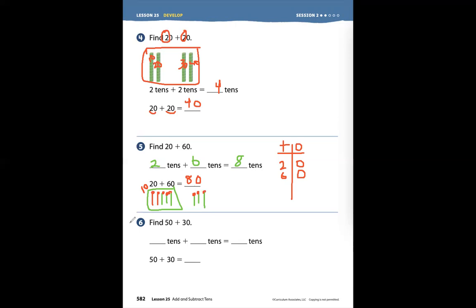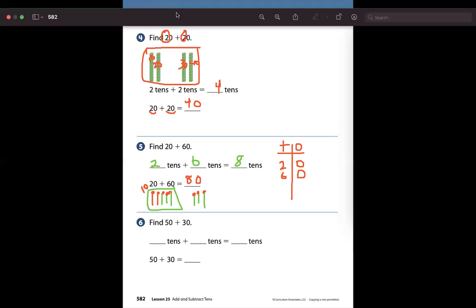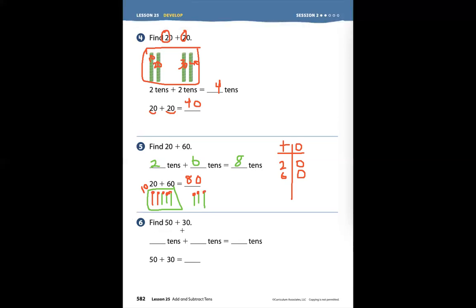Now we'll go to problem number six. Find 50 plus 30. Let's make our T-chart. We have tens.